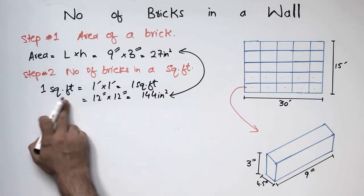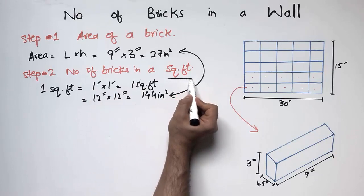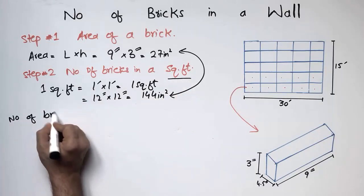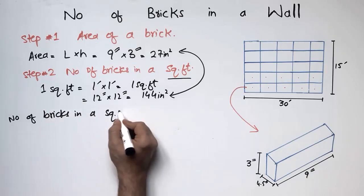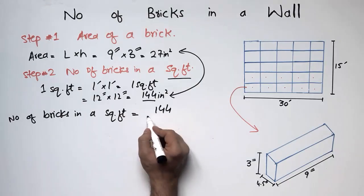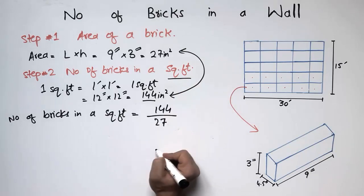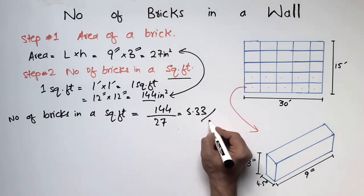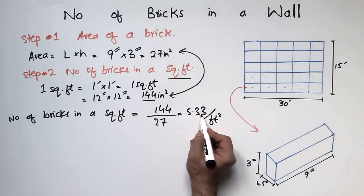So one square foot is equal to 144 square inches. The number of bricks in one square foot is equal to this area — 144 square inches — divided by the area of a brick, which is 27 square inches. This comes out to be 5.33. So in one square foot area, we have 5.33 bricks.